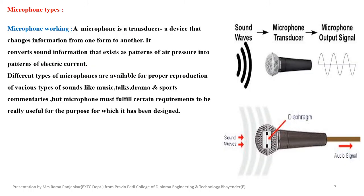Microphone types and working: a microphone is a transducer — a device that changes information from one form to another. It converts sound information that exists as patterns of air pressure into patterns of electric current. Different types of microphones are available for proper production of various types of sounds like music, talks, drama, sports commentaries. A microphone must fulfill certain requirements to be useful for its intended purpose.